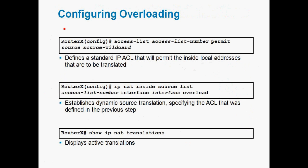To configure overloading, first we give the access list command: 'access-list [number] permit [source] [wildcard mask]'. This specifies which network is permitted to be translated. After defining the access list, we use the command 'ip nat inside source list [access-list-number]' to associate the access list with NAT translation.